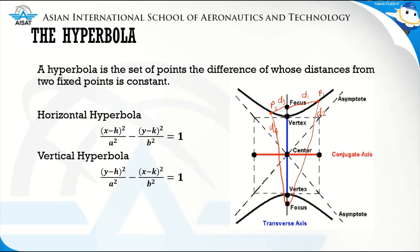Now let's write an equation that represents the difference in the distances of these points from the foci. For the first point we can write it as D sub 2 minus D sub 1, and for the second point P sub 2 we can write it as D sub 4 minus D sub 3. By definition, the difference for the first point and the difference for the second point are equal.